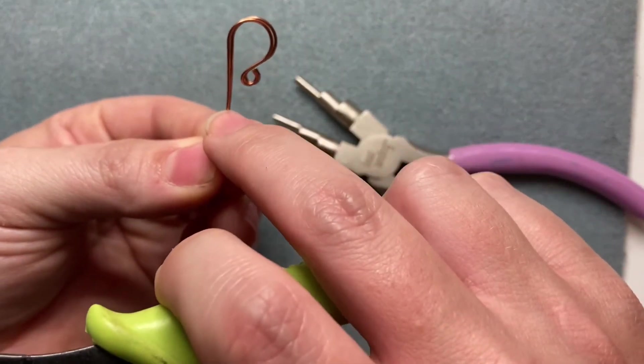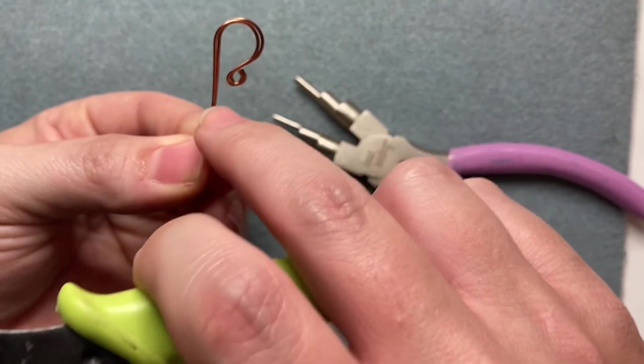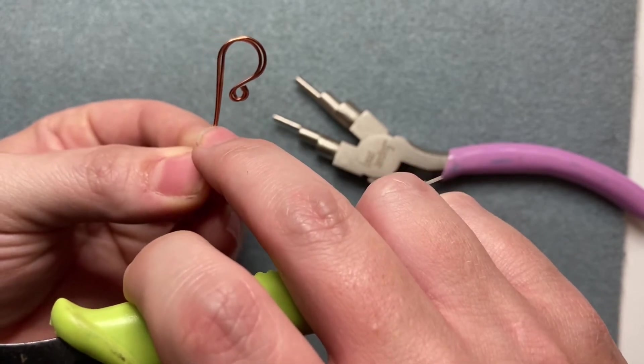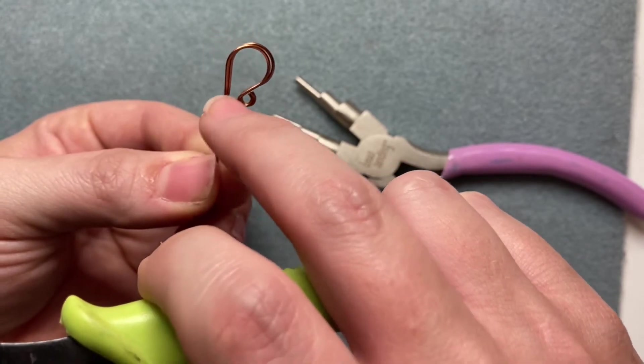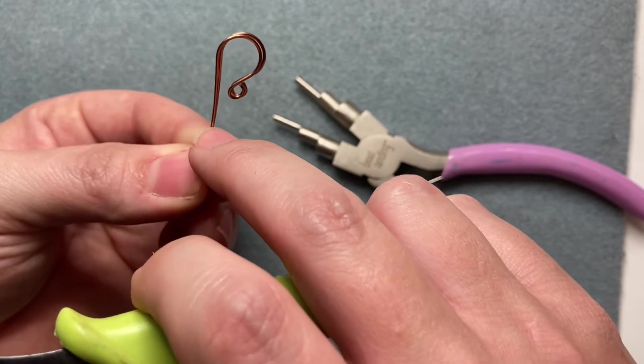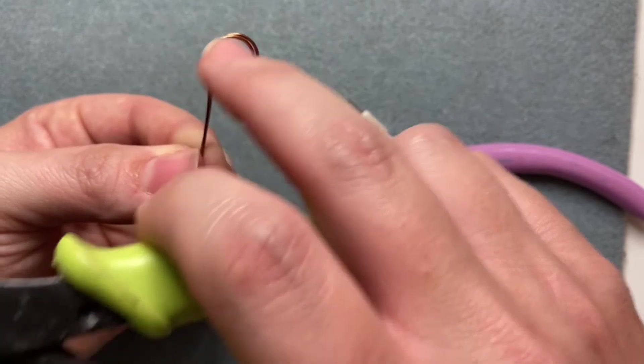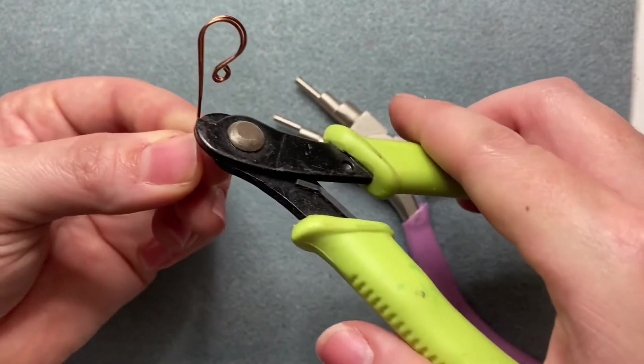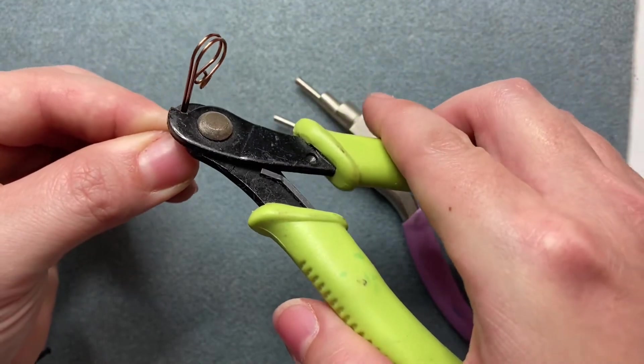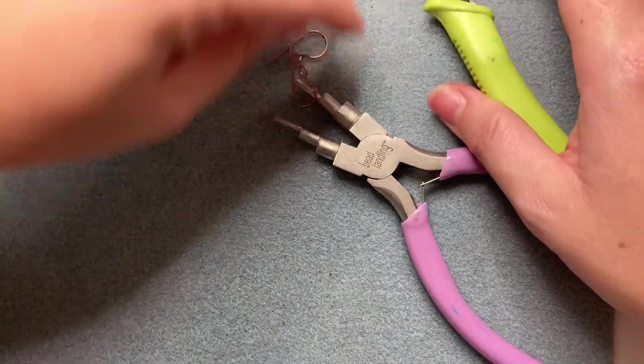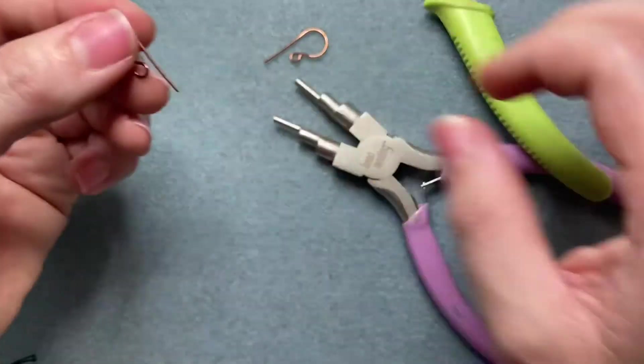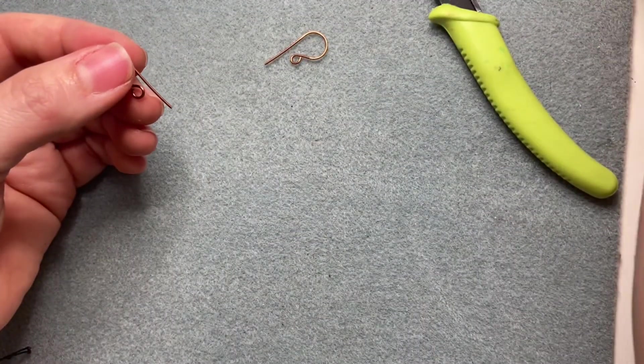So now we're going to cut. I like to cut about a little bit down from the loop, but again it's just personal preference how long you want your earrings to rest outside of the ear. So I just cut off and then I take my chain nose pliers.